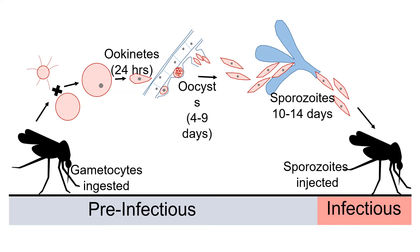When the mosquito takes up an infectious blood meal, the parasite spends a long period of time developing inside the mosquito's gut as an oocyst, before it moves to the salivary glands as a stage called the sporozoite and becomes infectious. This development period — called the EIP, or extrinsic incubation period — takes up a significant proportion of the female's lifespan.